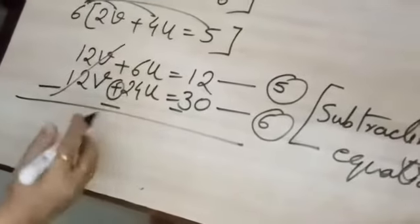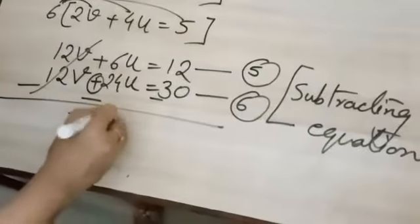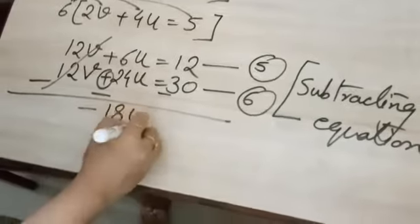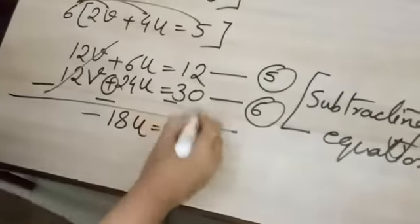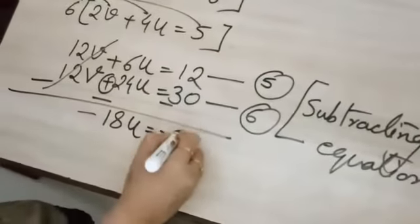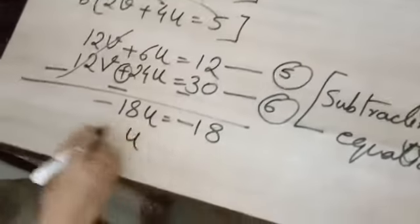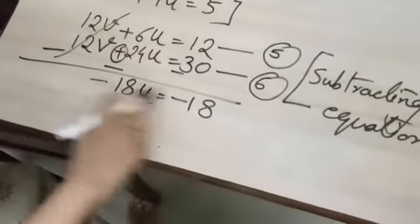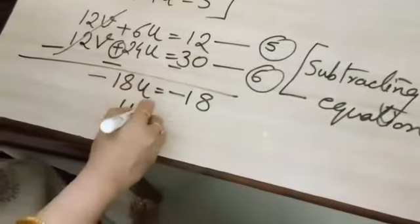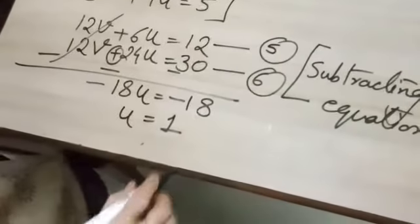What it will become: 12v will get cancelled, and here it will come minus 18u is equal to minus 18. So u is equal to, after cancellation you will get only 1.